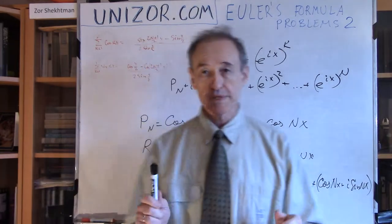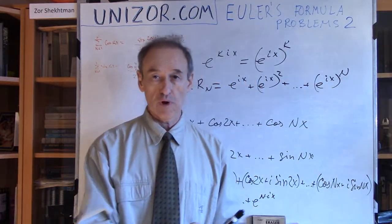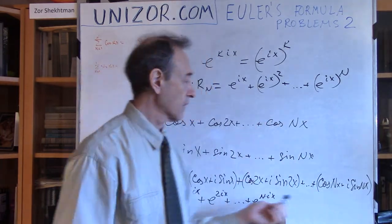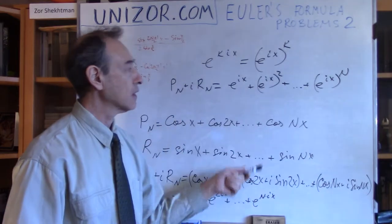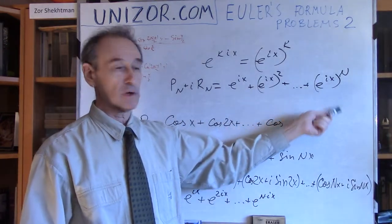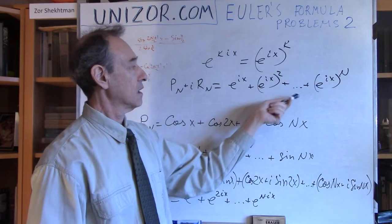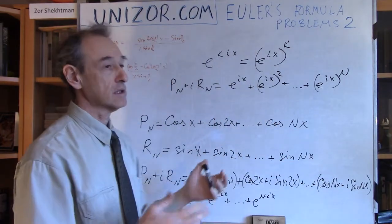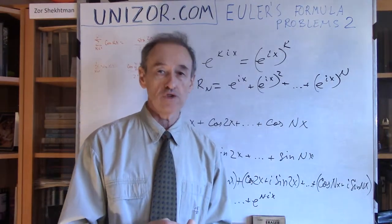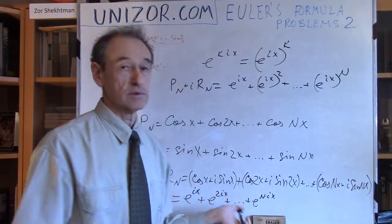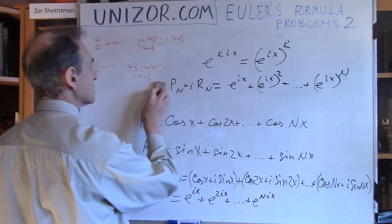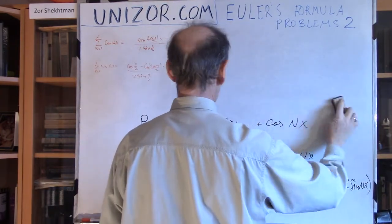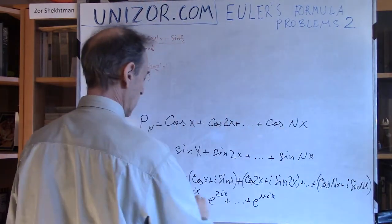On my website, unizor.com, where this lecture is presented, it also has all the required calculations for summing the geometric progression, converting back to the trigonometric formula, and finally, after certain manipulations, the final result. Let me just write it for you — you can go to my website and find out the full derivation.